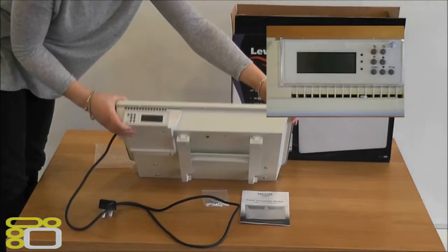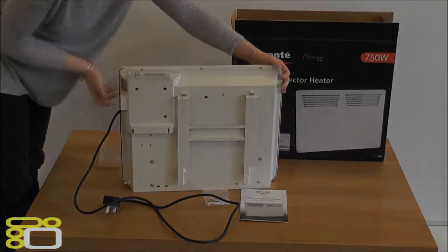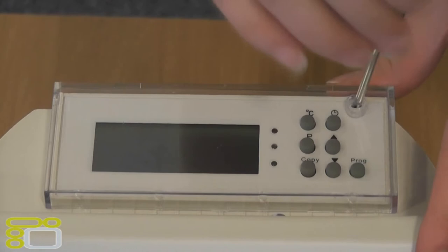Finally on top of the heater you will find a digital programmer which is fitted with a child proof cover which is removable by unscrewing the fixings.